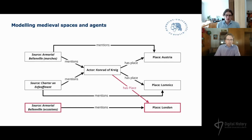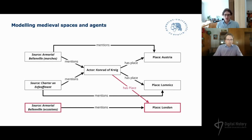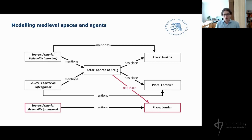So now we have at least three different places Conrad of Kraig is associated with. Furthermore, our example actor is associated with each place through a completely different role and in a completely different context.